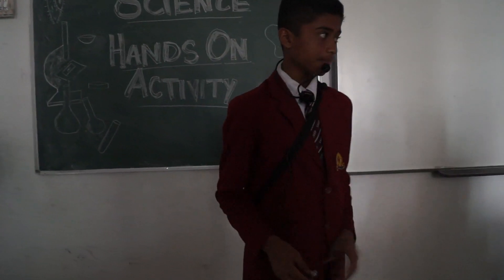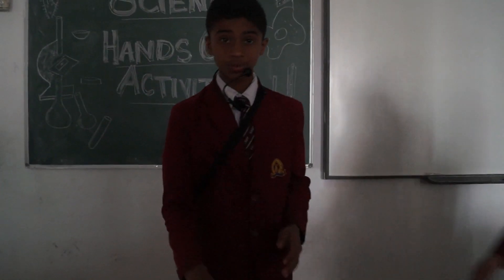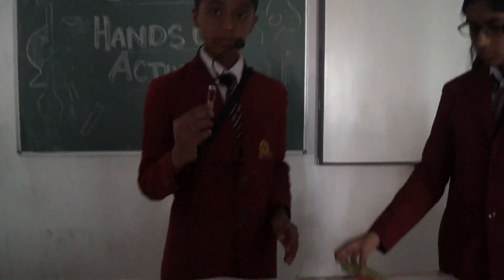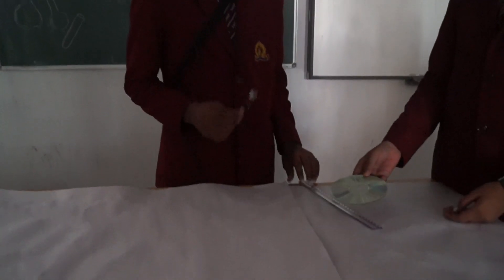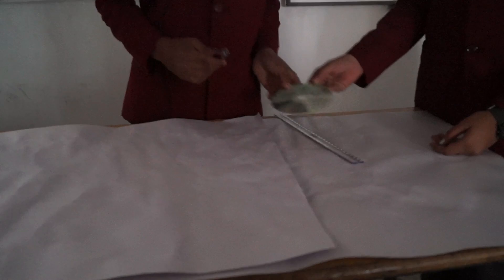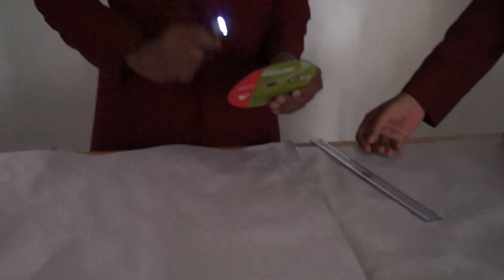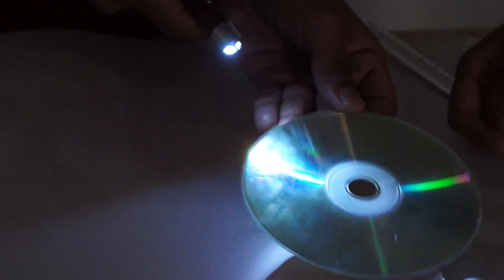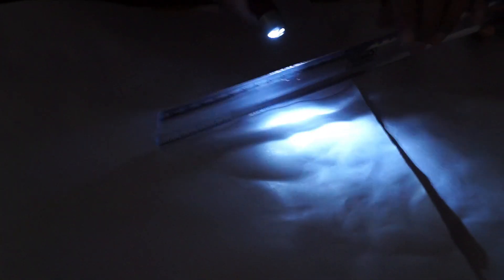I will be proving dispersion with the help of a CD, white light, and a scale. First, we will take a CD and put it in the path of white light — we can see that a spectrum is being formed. To prove it again, we need a scale. When we put the light on the scale, we see that a mini rainbow is being formed. This also proves dispersion.